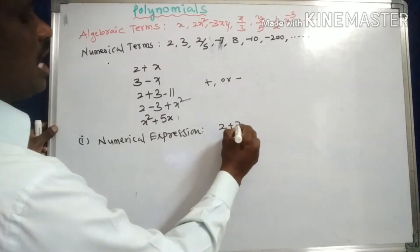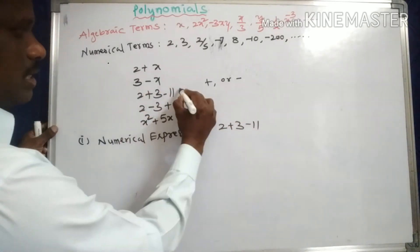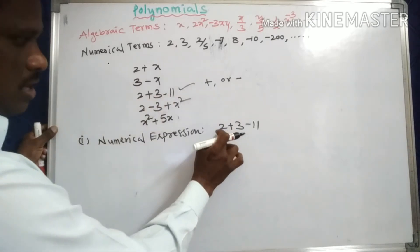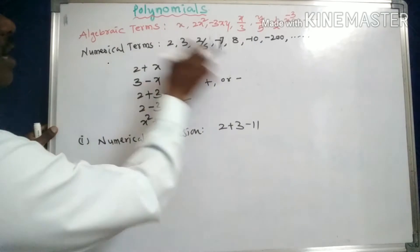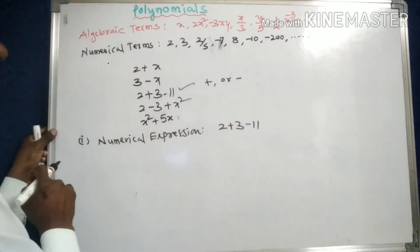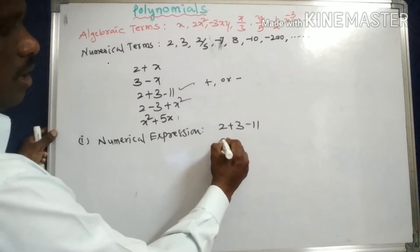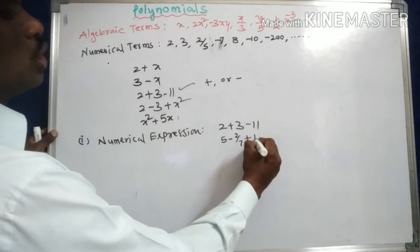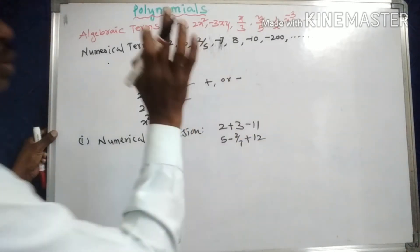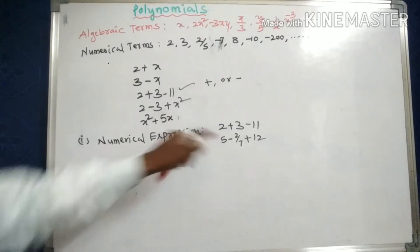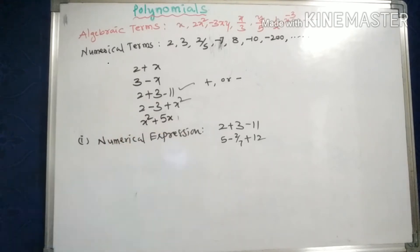For example, 2 plus 3 minus 11 — these three terms are numerical terms, so it is called a numerical expression. Another example: 5 minus 2 by 7 plus 2 by 1 — these three are also numerical terms, so this type of expression is called a numerical expression.